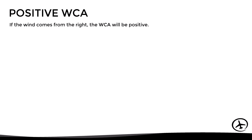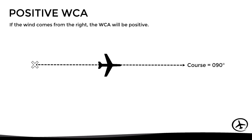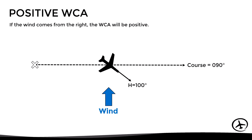On the other hand, if the wind comes from the right, the wind correction angle will be positive. With the same desired course of 090, a crosswind from the right means the nose must point slightly into the wind — let's say to heading 100. The wind correction angle is again 10 degrees; however, since the current heading is greater than the desired course, the wind correction angle is positive.